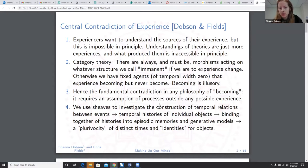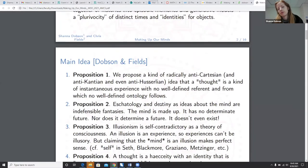Understandings of theories are just more experiences, and what produced them is actually inaccessible in principle. So category theory is here to help us. There's always, and must be, morphisms acting on whatever structure we call immanent if we are to experience change. Otherwise, you're going to have fixed agents of temporal width zero that experience becoming, but they never become. So becoming is illusory, hence the fundamental contradiction in any philosophy of becoming.